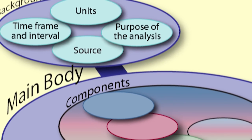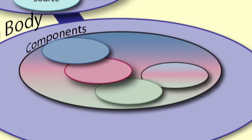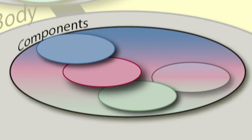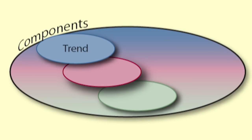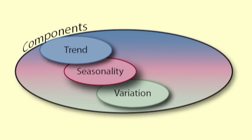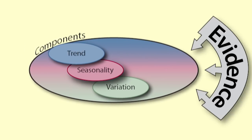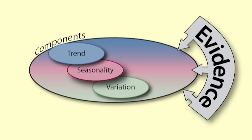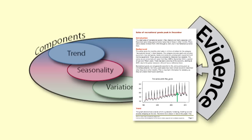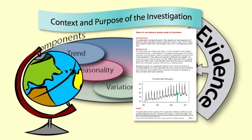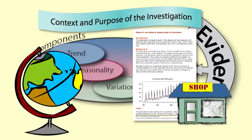Now we get to the main part of the report where you explain the different components: trend, seasonality, and variation. For each of the components, you should give evidence from the graphs or output to support what you are saying. You should also apply the findings to the real-world context and purpose of the investigation.